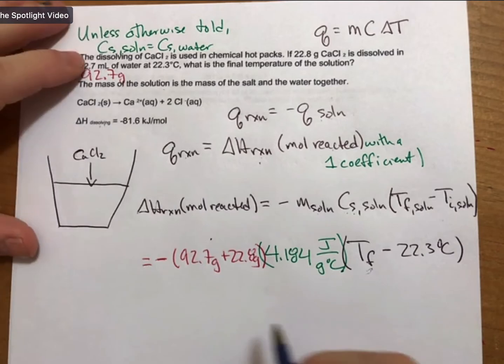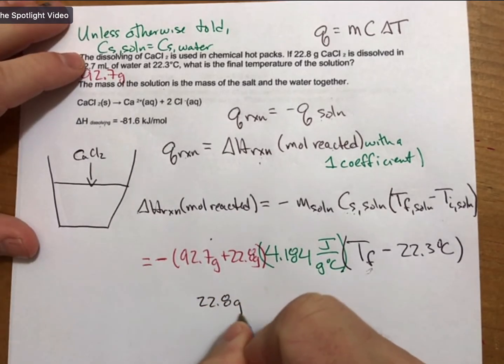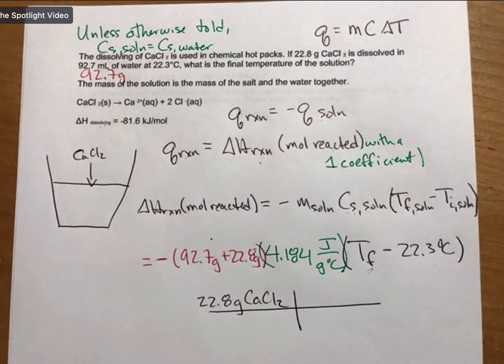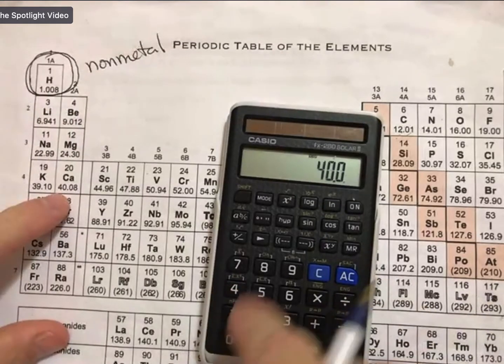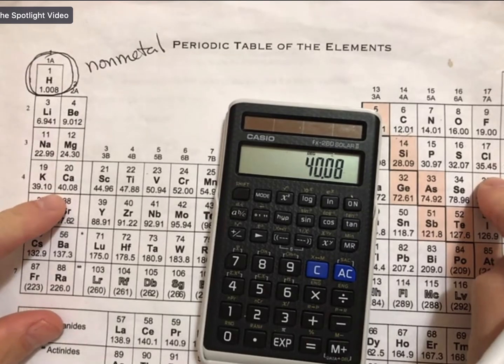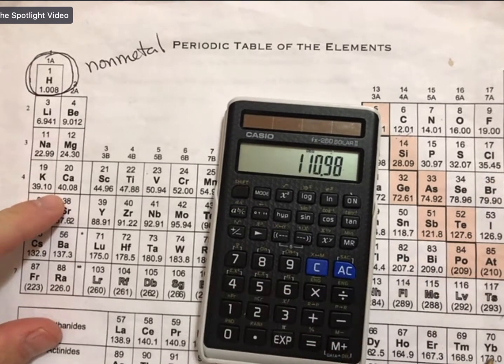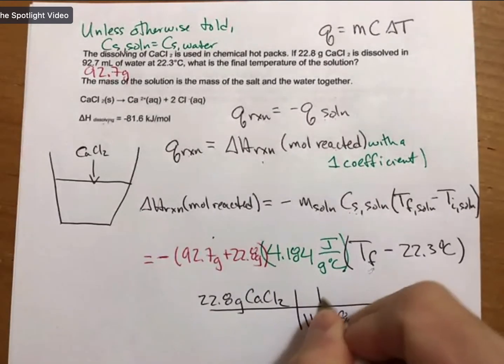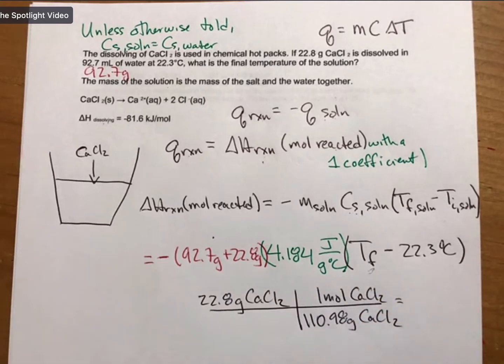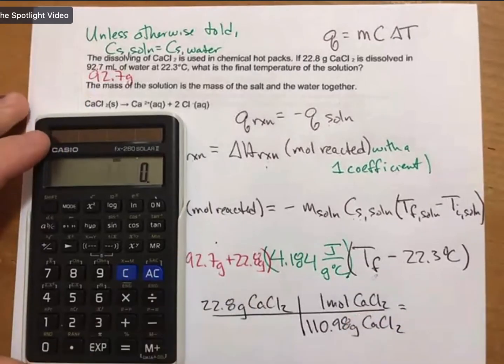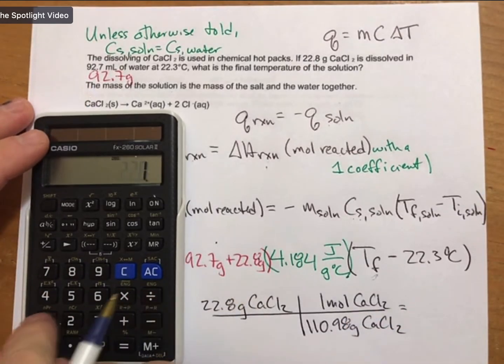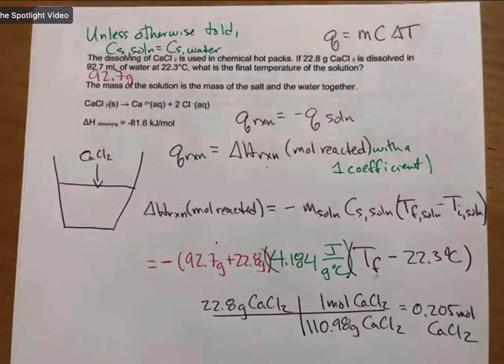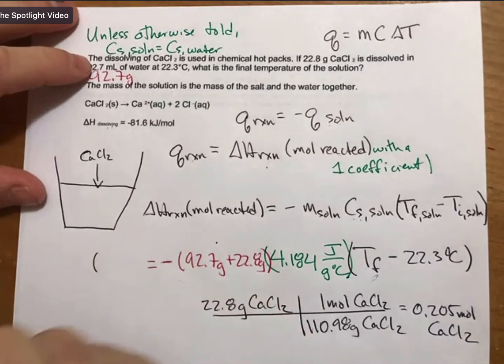So my mass of my solution is going to be 92.7 grams plus my 22.8. Then I'll put in my minus sign. Don't forget it. Now my moles reacted. I know I have 22.8 grams of calcium chloride that are reacting and I have to turn those into moles. To do that we need the molar mass. I turn to my periodic table. I get my molar mass: 40.08 plus 2 times 35.45 equals 110.98. And now figuring out my moles: 22.8 divided by 110.98, I get 0.205 moles calcium chloride.